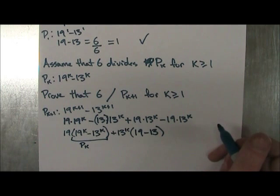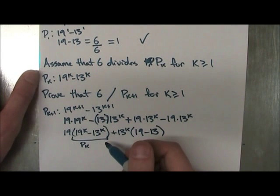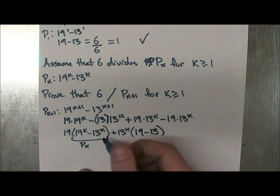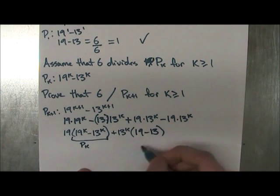Okay, so if you remember from the last video, because we have this P_k, we know this is divisible by 6 because we assumed it in our part 2 here, the step 2, the assumption part. So we know this is divisible by 6. But what about this part right here?